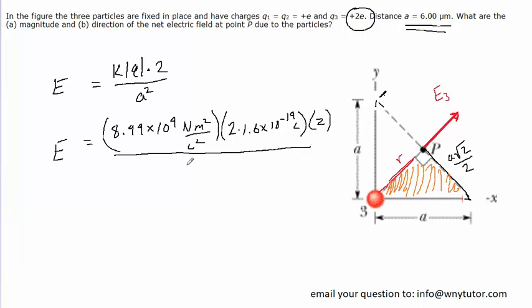And then we're going to divide by A squared. We were told that A is equal to 6 micrometers, but we better convert that into meters in order for the units to work out here. So 6 micrometers would be 6 times 10 to the negative 6 meters. And then we don't forget to square it. And when we plug that into our calculators, we should get about 160 Newtons per Coulomb. This is the final answer for the magnitude of the electric field at point P.